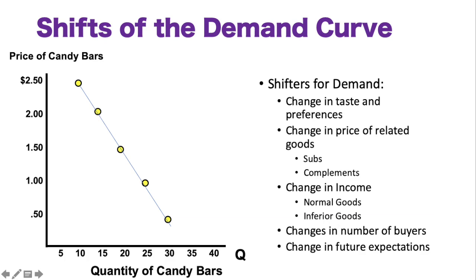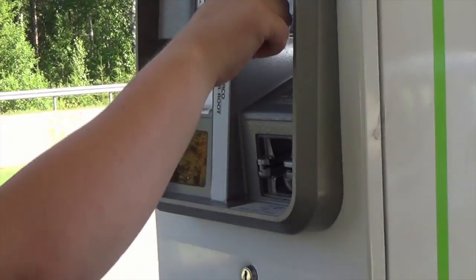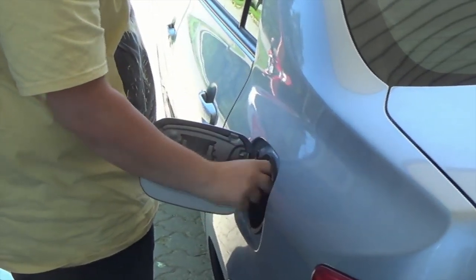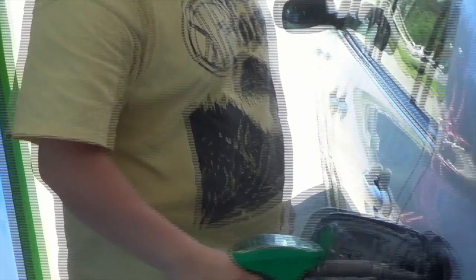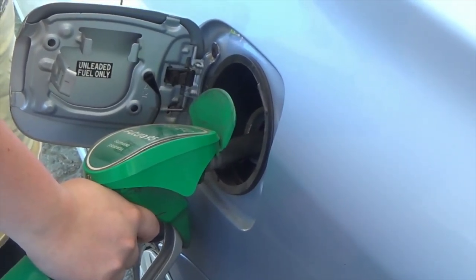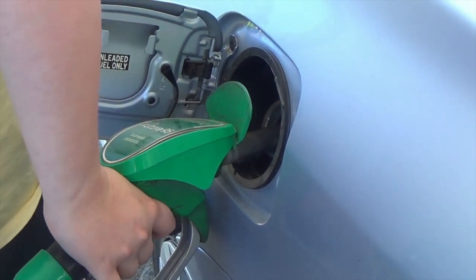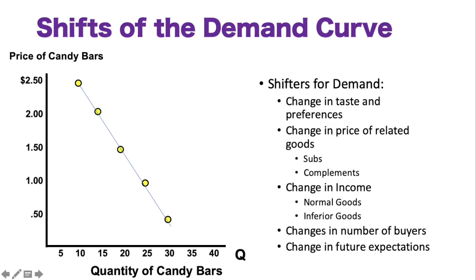Fifth: future expectations. If price levels are expected to fall, people will buy less today since the price will be cheaper in the future. Think of gas — if you think gas prices will be lower in a few days, you hold off on filling up your tank. Conversely, if gas prices are cheap right now and you expect them to rise, you'll rush to fill up immediately. So demand will increase if we expect price levels to increase, and demand will fall if we expect price levels to decrease in the future.